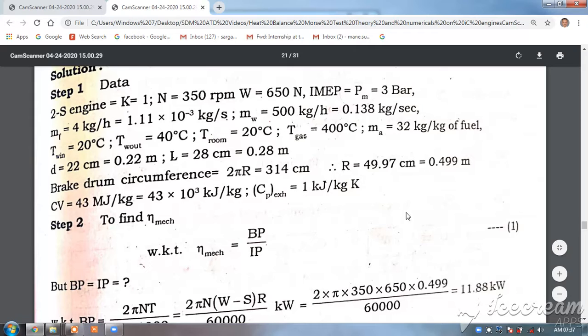Now the data given: two-stroke engine so k = 1, N = 350 rpm, W = 650 N, IMEP Pₘ = 3 bar, mass of fuel mf = 4 kg/hr = 1.11×10⁻³ kg/s, mass flow rate of water mw = 500 kg/hr = 0.138 kg/s, t_water_inlet = 20°C, t_water_outlet = 40°C, t_room = 20°C, t_exhaust = 400°C, mass of air = 32 kg per kg of fuel.